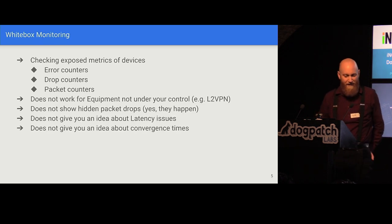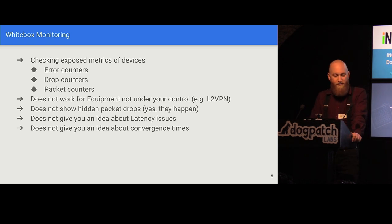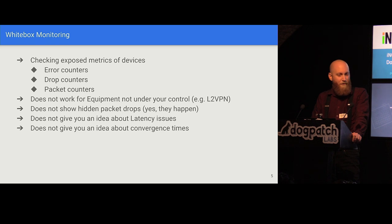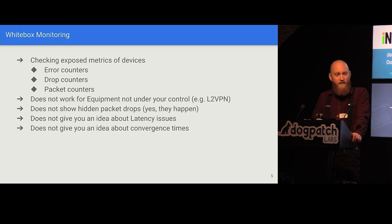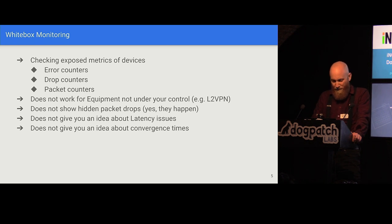With white box monitoring, you can check exposed metrics on every device: error counters, drop counters, packet counters. You might say if there are no drops according to the counters, you're not dropping packets — but that could or could not be true. This doesn't work for equipment not under your control. If you're renting an L2 VPN connection from site A to site B with multiple devices in between, you can't see those counters. And hidden packet drops are not shown by counters either.